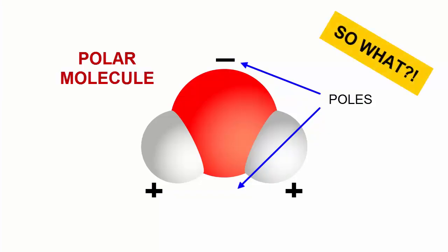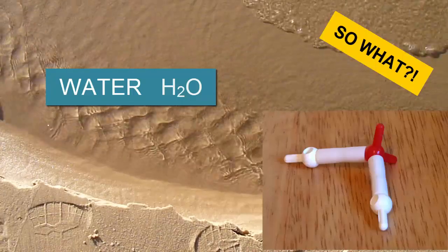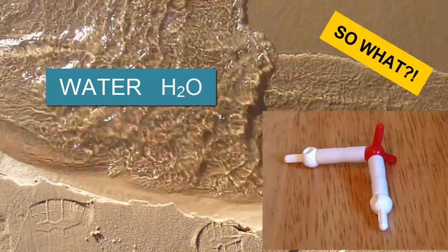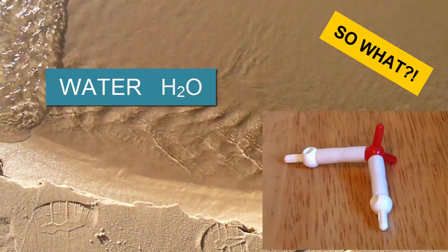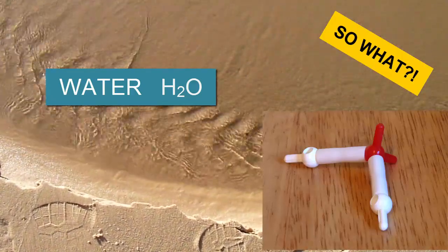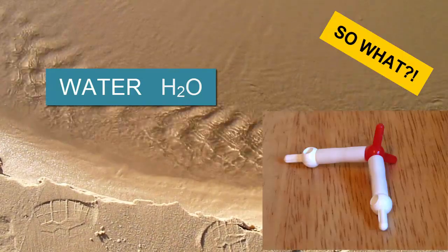So what? Why is it important that water is polar and has a bent shape? Because that shape greatly impacts its behavior, a behavior that is different than almost any other common substance, and that behavior is what allows life to function. Let's learn more.